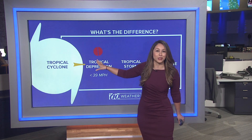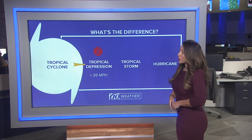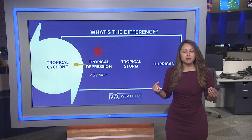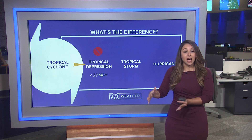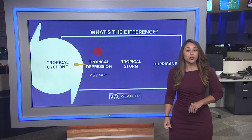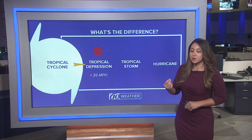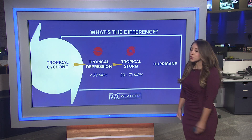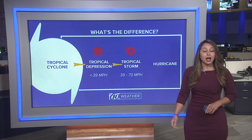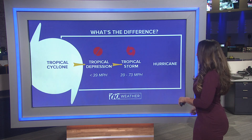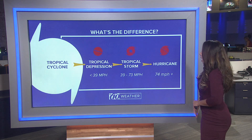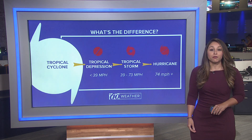I've included the icons here so you can see how we depict them whenever we're giving you the latest forecast. A tropical depression has maximum sustained wind speeds of less than 39 miles per hour. A tropical storm is 39 to 73 miles per hour. And once you're talking about a hurricane, especially category one status, that's anything above 74 miles per hour.